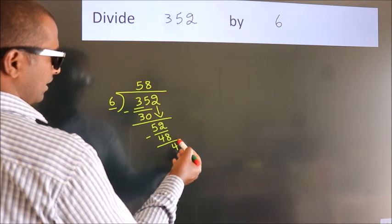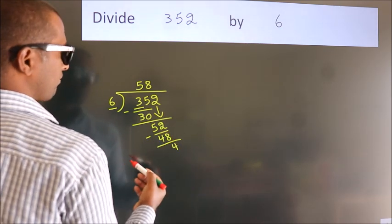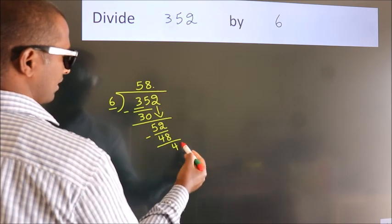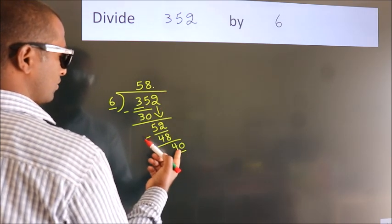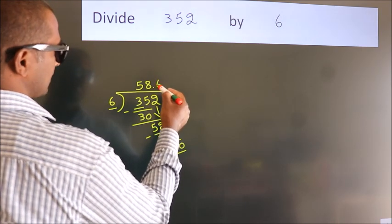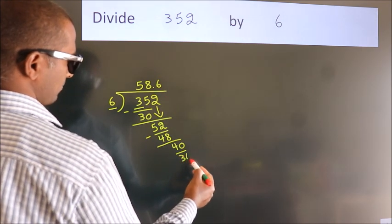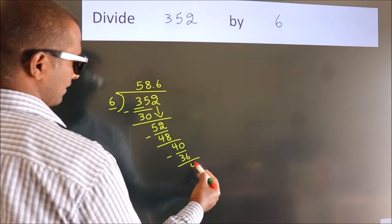After this, no more numbers to bring it down. So what we do is, we put dot, take 0. So, 40. A number close to 40 in the sixth table is 6, 6, 36. Now we subtract. We get 4.